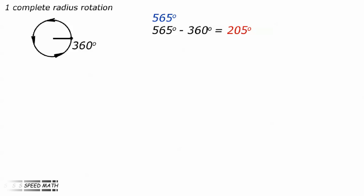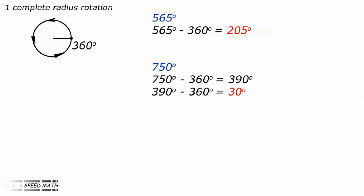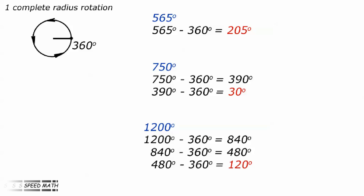Very large angles are those greater than 360 degrees — in other words, greater than one full rotation. Such angles are 565 degrees, 750 degrees, 1200 degrees. We can easily bring these down to size by taking away 360 degrees until we get a remainder less than 360. So 565 minus 360 equals 205 degrees. 750 minus 360 gives 390, and taking another 360 away gives 30 degrees. 1200 minus 360 is 840, minus another 360 is 480, and minus yet another 360 gives our final answer of 120 degrees.